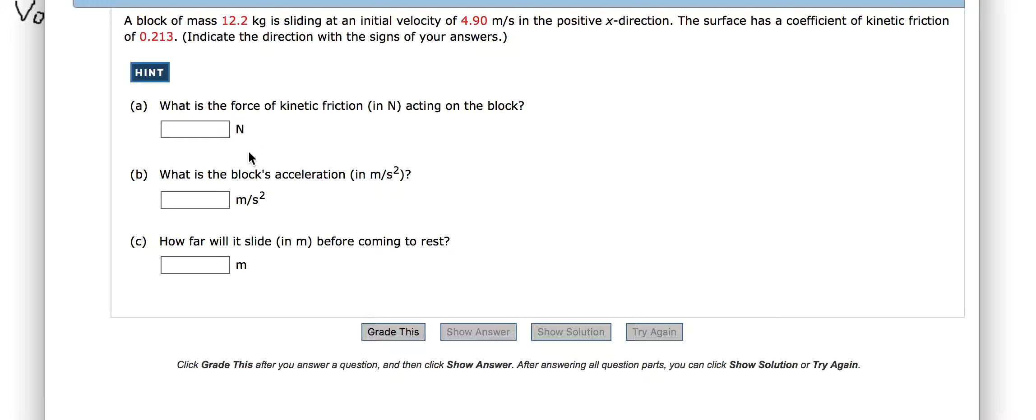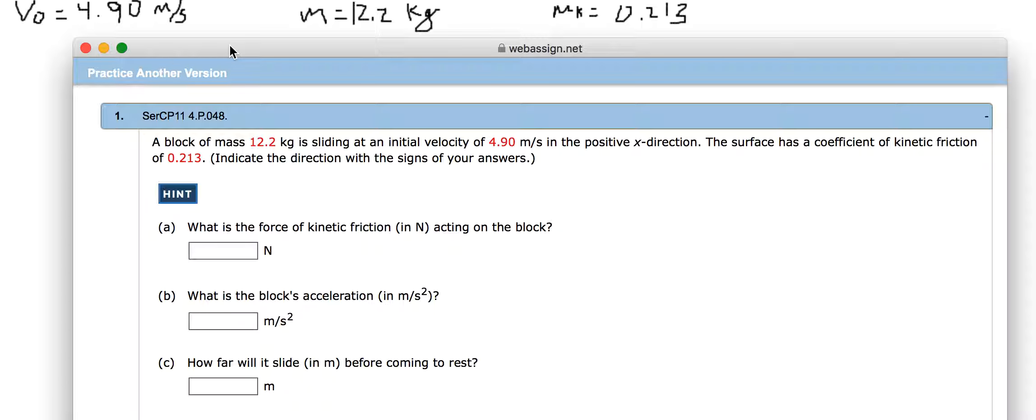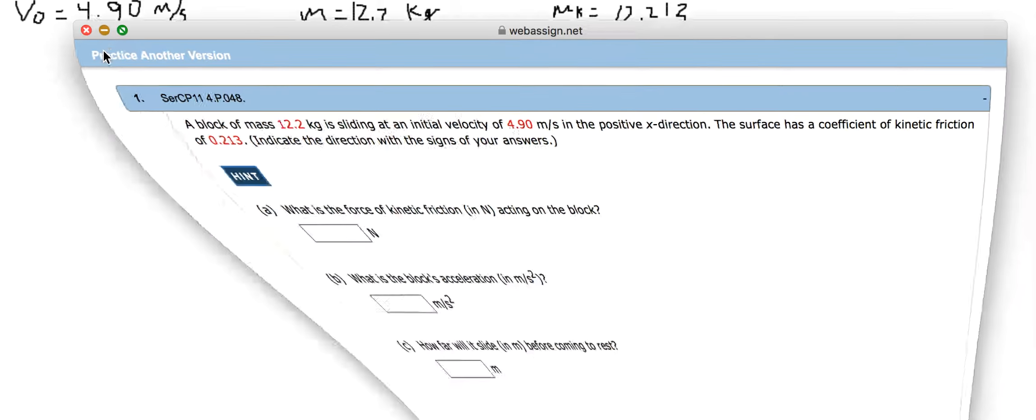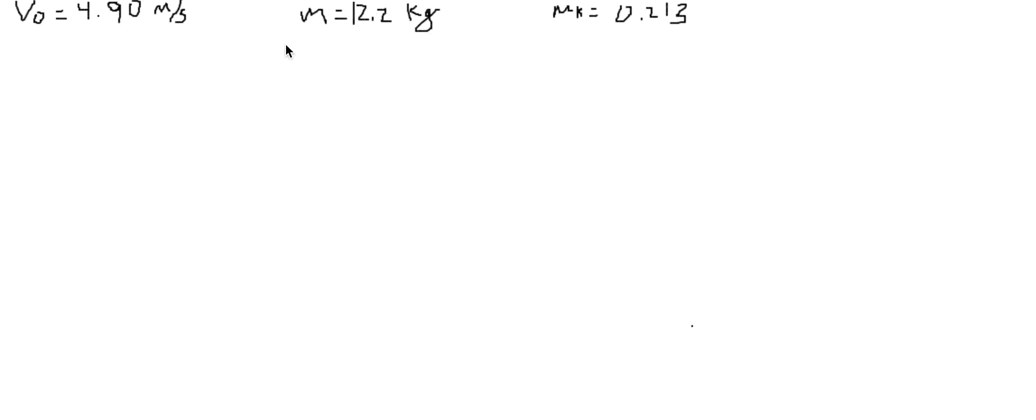So the first thing we can do is find the acceleration, and I wrote all our values right here. So what I always do first is write Newton's second law, which indicates that the sum, since we're moving in an x direction, it's going to be the sum of force in the x direction is equal to the mass times the acceleration in the x direction.